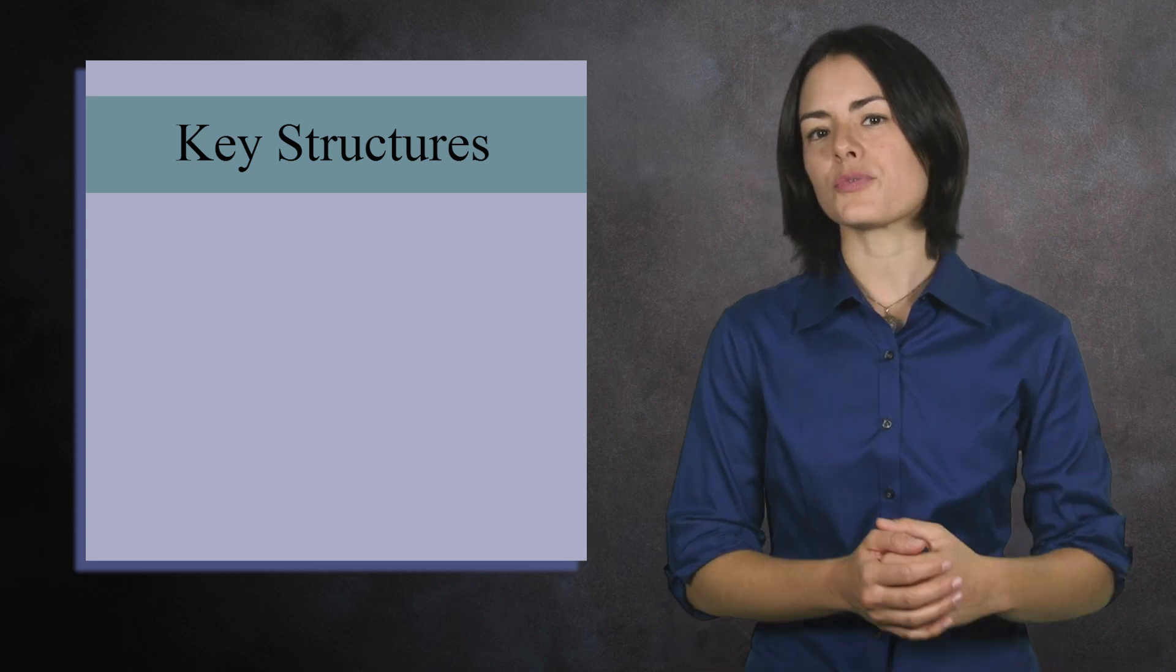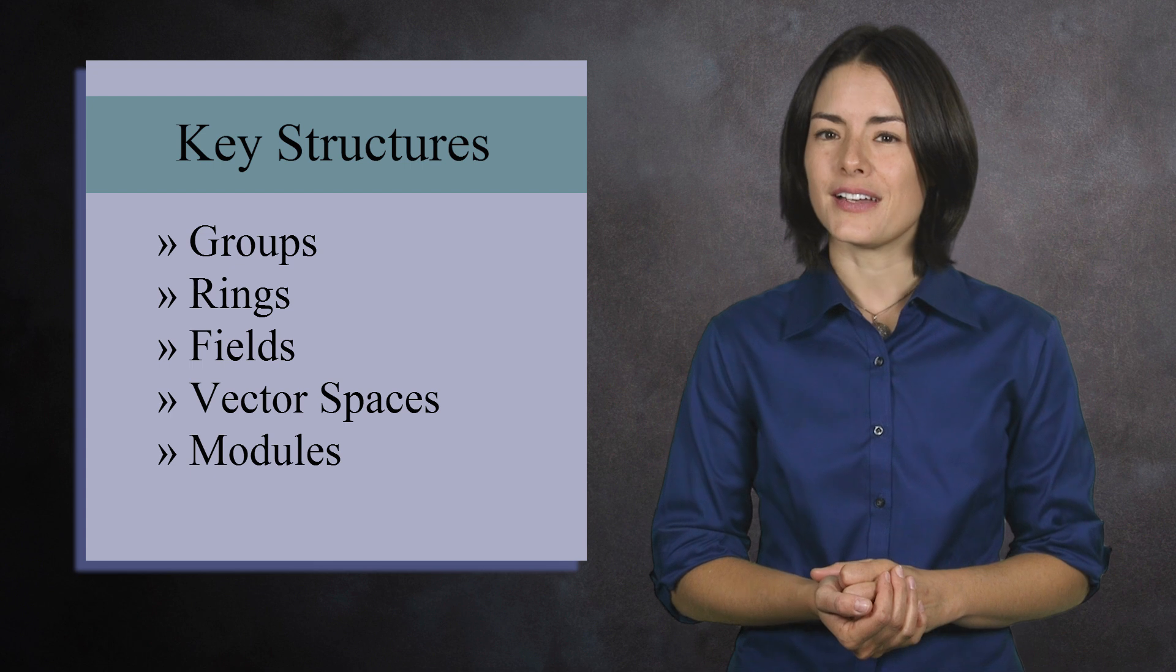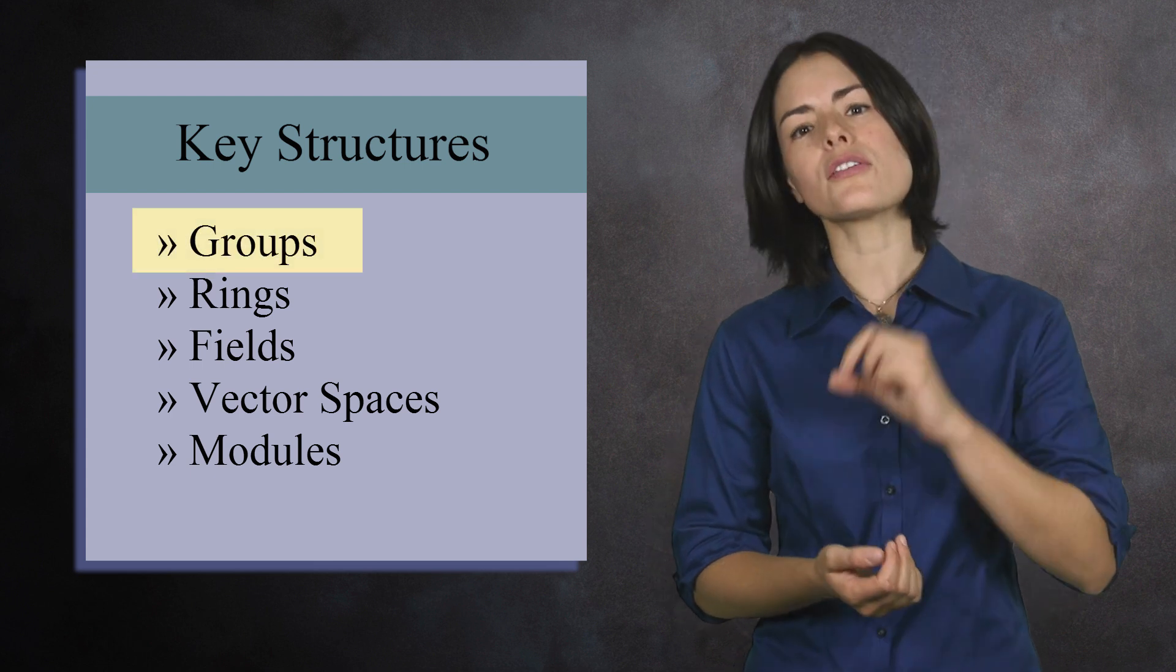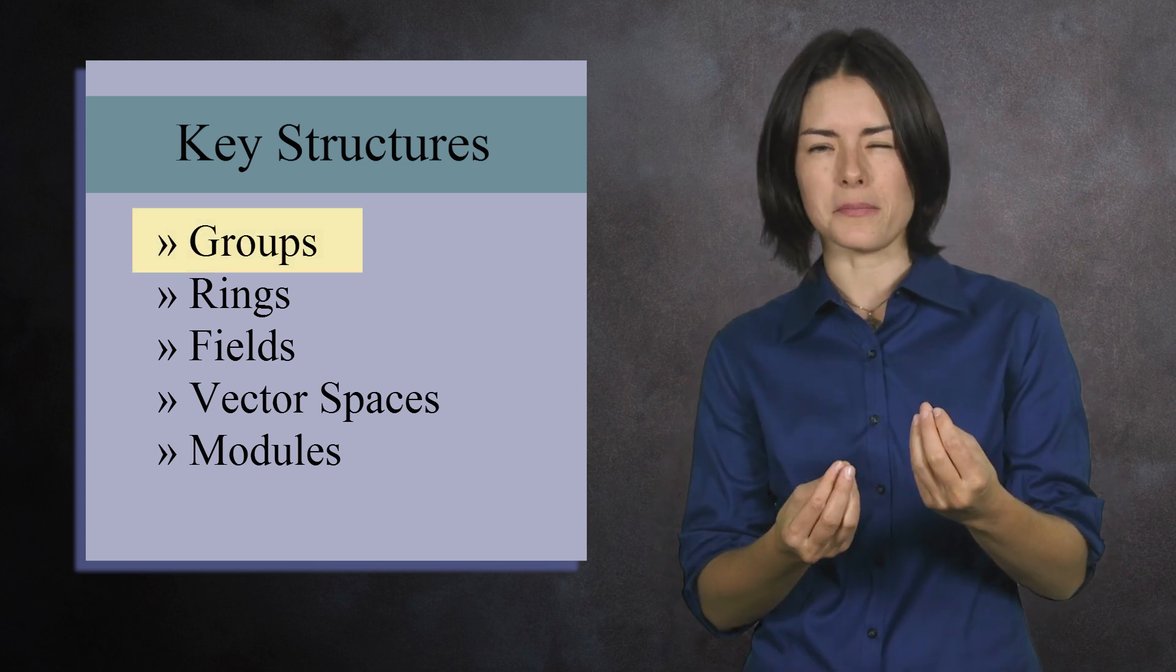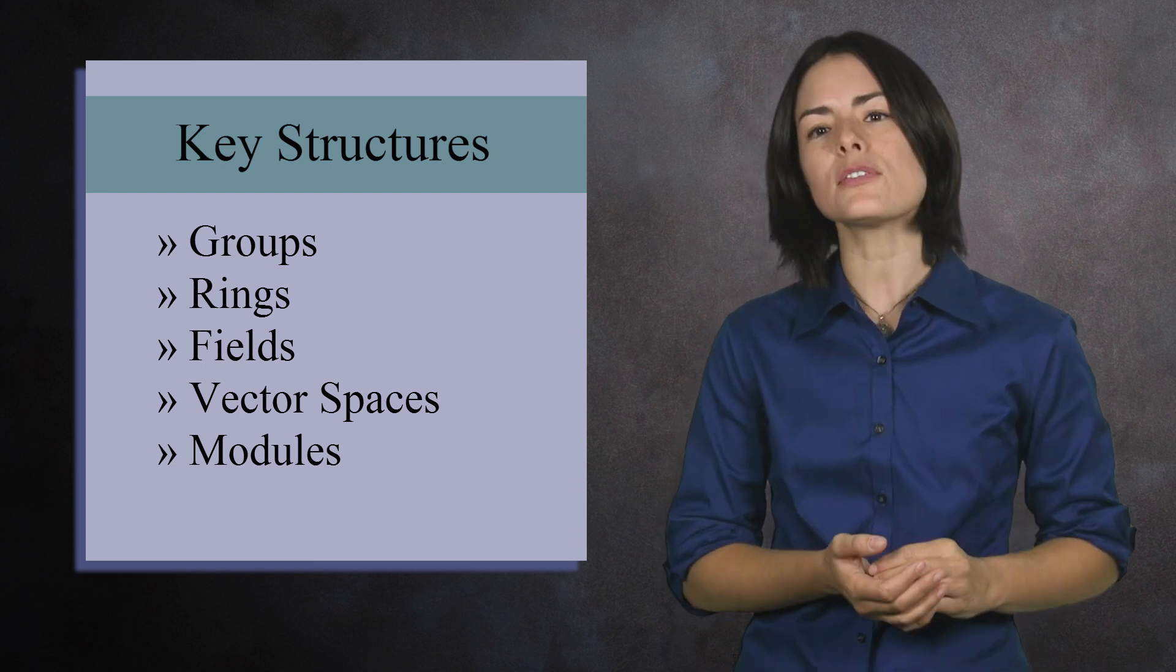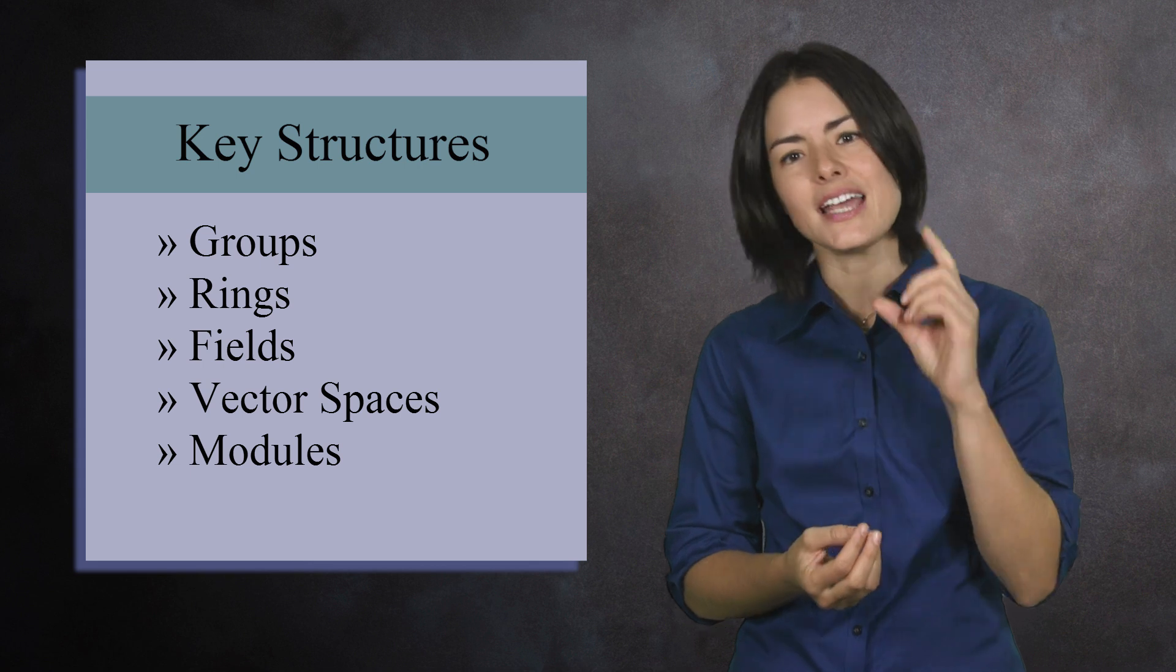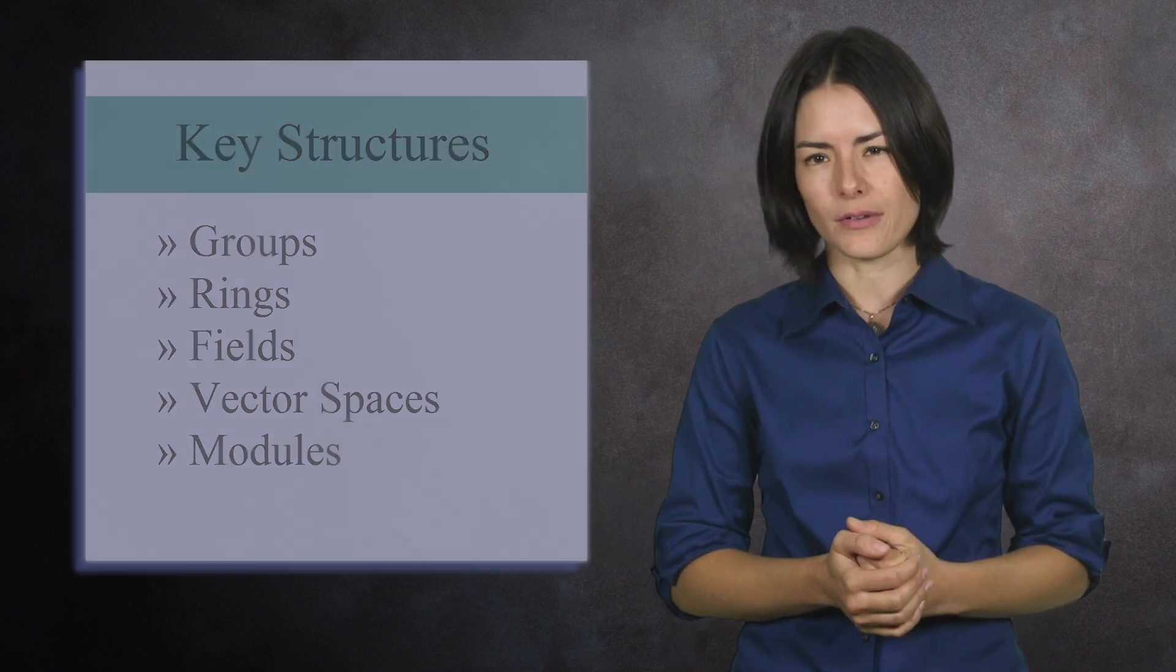The key structures in abstract algebra are groups, rings, fields, vector spaces, and modules. You start with groups because the other four structures are built upon them. All of these concepts are fairly abstract, so it's helpful to learn lots of concrete examples to help keep you grounded and test out everything that you learn. Today, let's look at examples of rings.